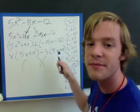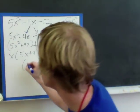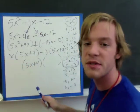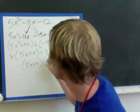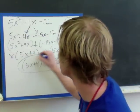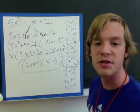First parentheses is what's the same, 5x plus 4, and second parentheses is what's in front, x minus 3. And this right here is our final answer.